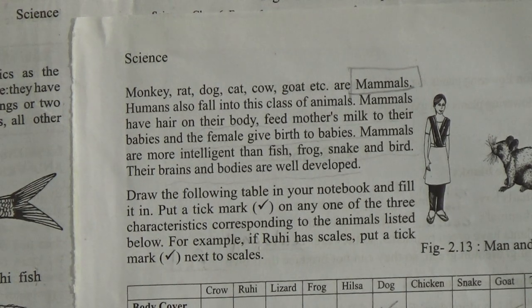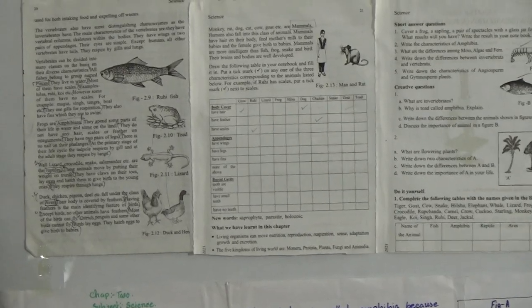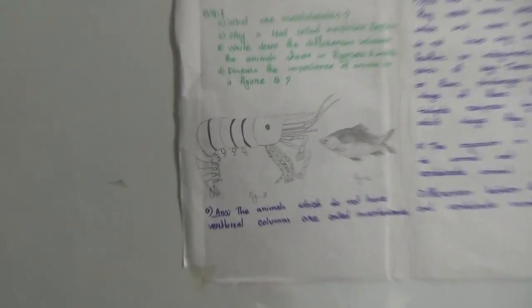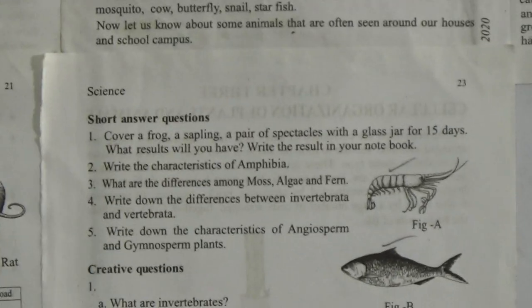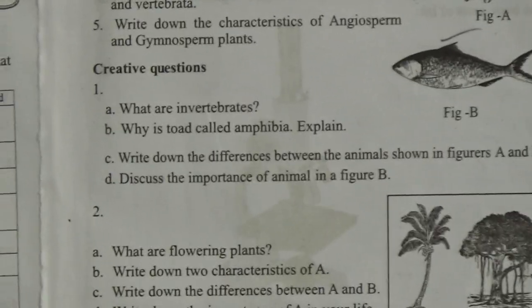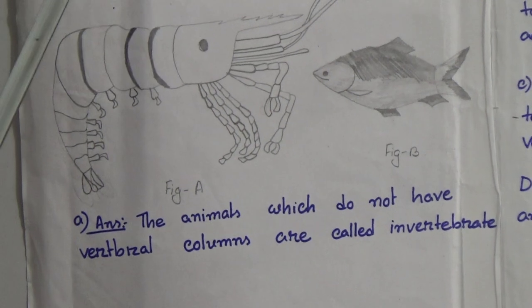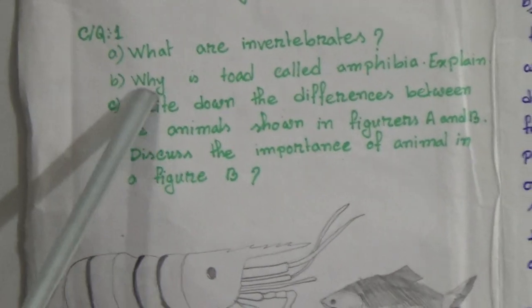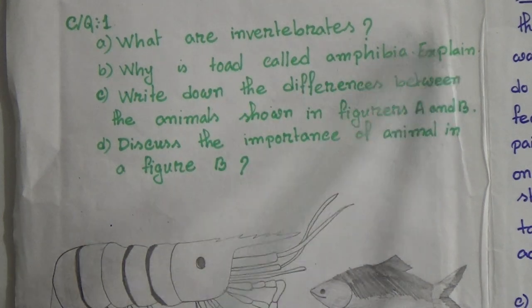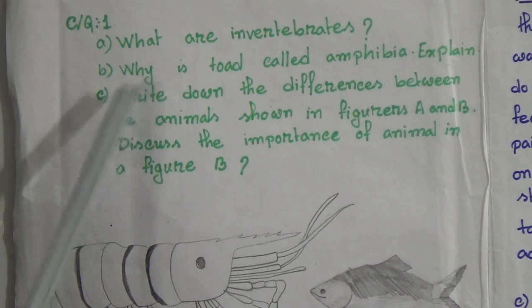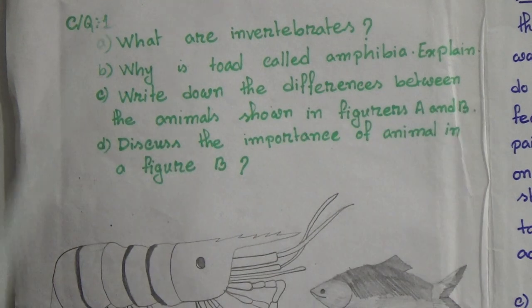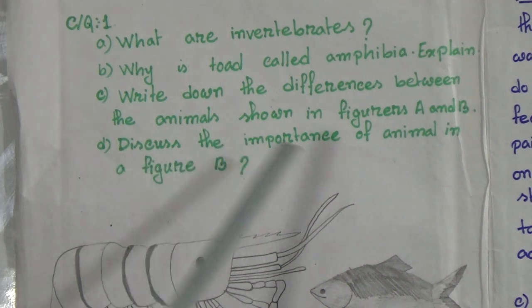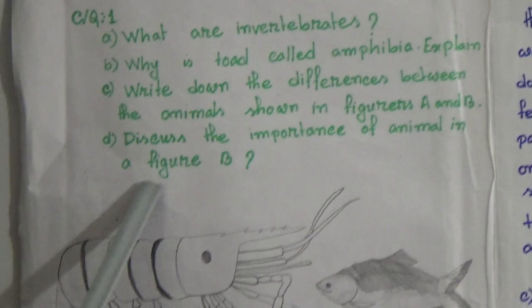I have finished reading this chapter. Now I will give you CQ number 1. You will find this question in your book on page number 23. For CQ 1, there are two pictures — Figure A and Figure B. The questions are: (a) What are invertebrates? (b) Why is a toad called amphibia? Explain. (c) Write down the differences between the animals shown in Figure A and Figure B. (d) Discuss the importance of the animal shown in Figure B.